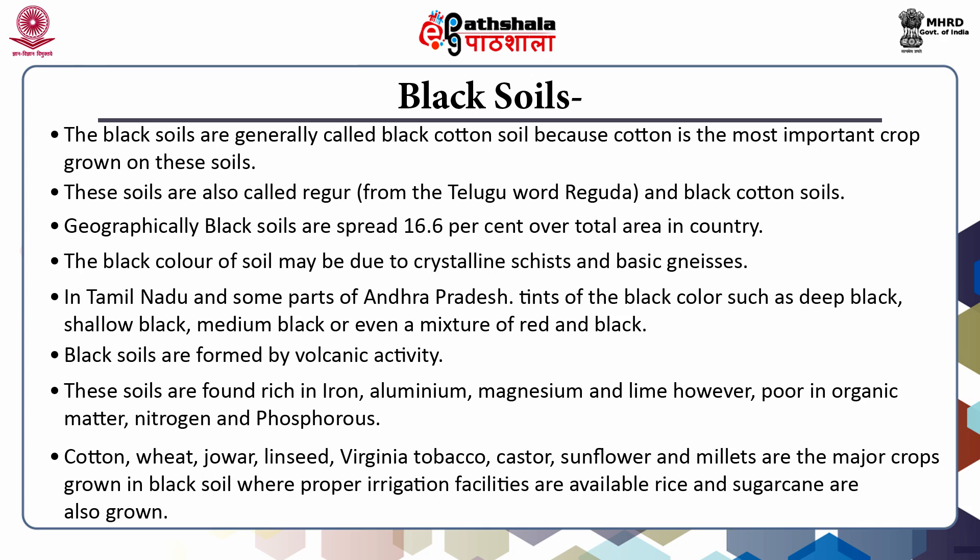As a general rule, black soils of uplands are of low fertility, but they are darker, deeper and richer in the valley. Because of their high fertility and retentiveness of moisture, the black soils are widely used for producing several important crops. Some of the major crops grown on black soil are cotton, wheat, jawar, castor, sunflower, and millet. Rice and sugarcane are equally important where irrigation facilities are available.